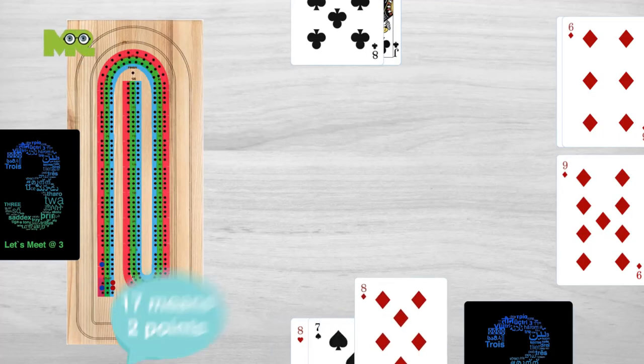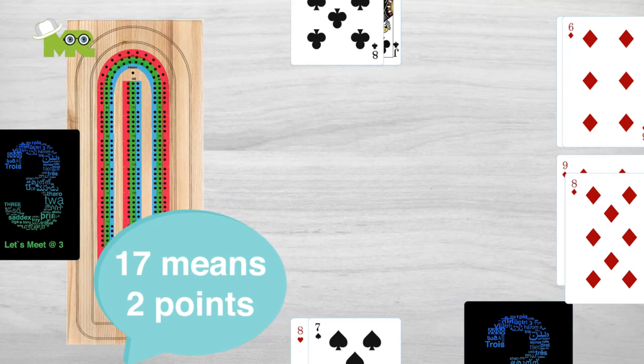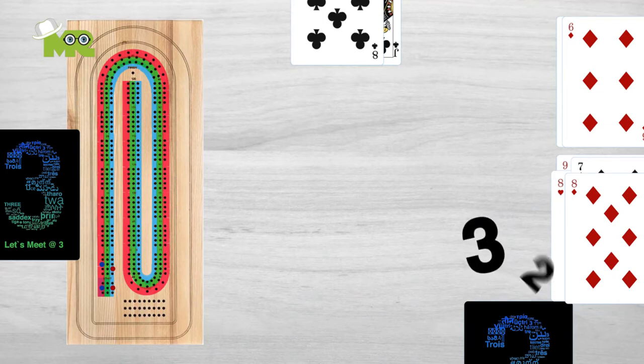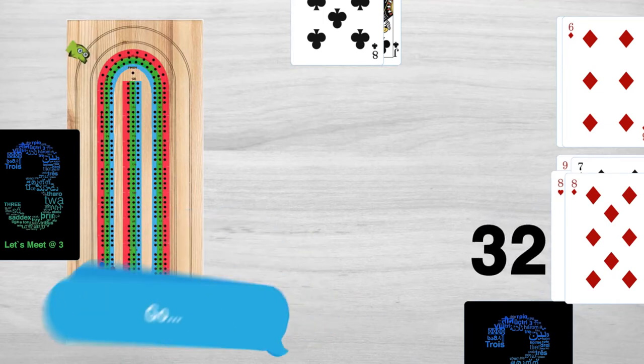Players are required to announce the running total while they place their cards. If a player cannot play a card from their hand without keeping the running total under 31, they say go and the opponent player gets one point.